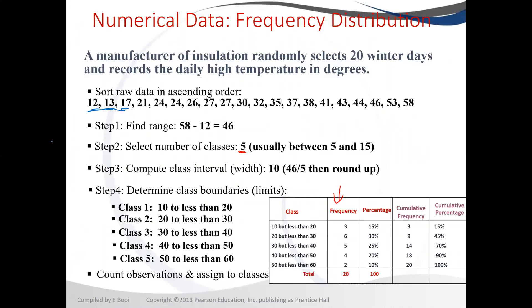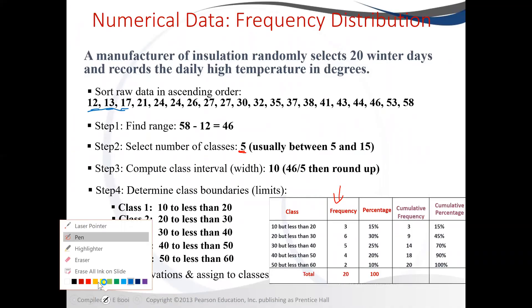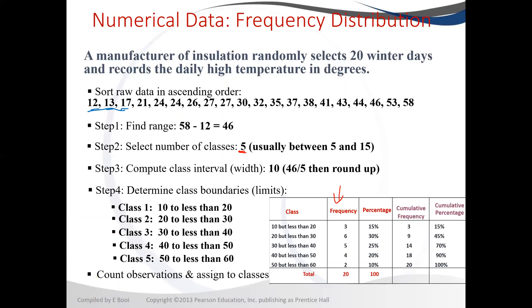For class 2 we do the same: it starts from 20 but goes up to less than 30, so it must not include 30. We highlight those values — all of them up to 27 will be part of the second class boundary. We repeat the same step until we get to the last class boundary, which is 50 to 60. Those that are 50 or more but less than 60 — there are only two of them. Then we can calculate the percentages in that column.